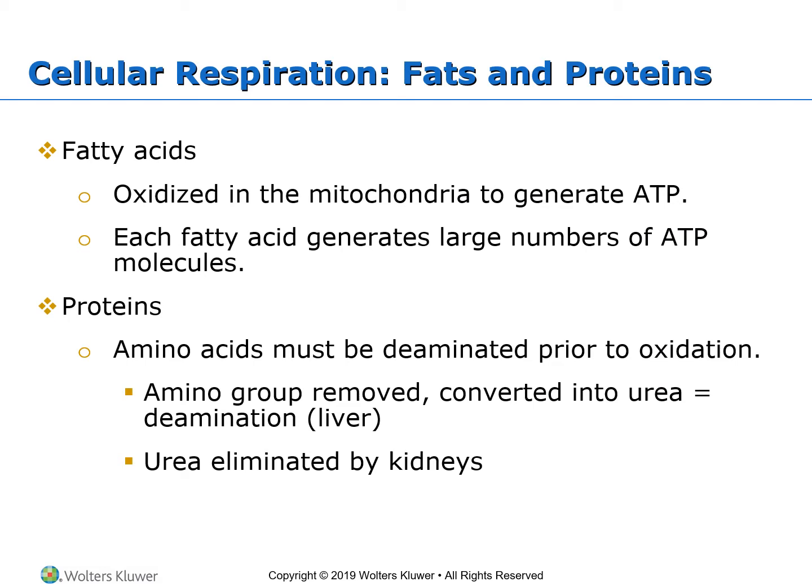For cellular respiration using fatty acids or amino acids as energy sources: fatty acids are used more often to generate energy than amino acids. The oxidation of fatty acids happens inside the mitochondria to generate ATP. Unlike glucose, which can start as an anaerobic process, fatty acids must have oxygen — they can only be burned in the presence of oxygen. They are completely broken down to produce ATP, with carbon dioxide and water as waste products.